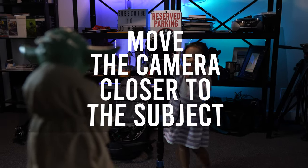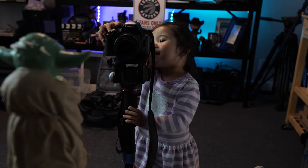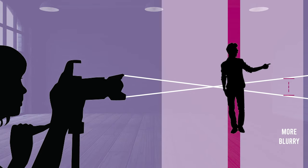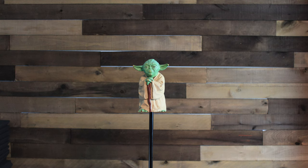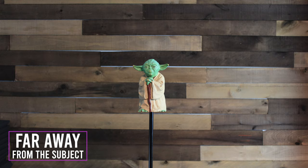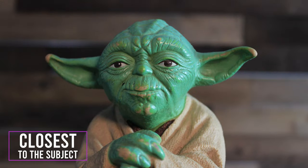The first way to make the background of an image or video more blurry is to move the camera closer to the subject. When you do this, it changes the angle at which the rays converge, which decreases the depth of field or range of acceptable sharpness, ultimately making the background more blurry. So if you notice in the first picture, I was about 10 feet away from Yoda, and there's still plenty of detail in the background. When I moved to about 5 feet away, it started to get a little bit blurry. But when I got really close, that's when the background was for sure the most blurry.